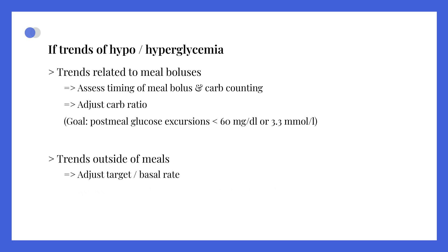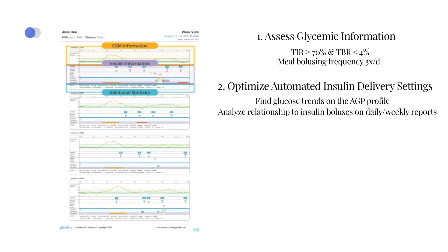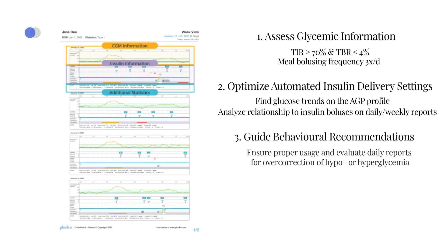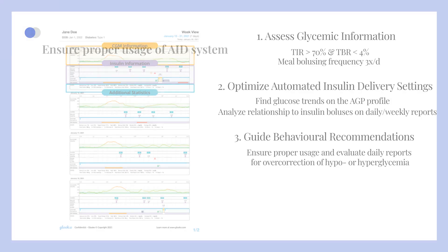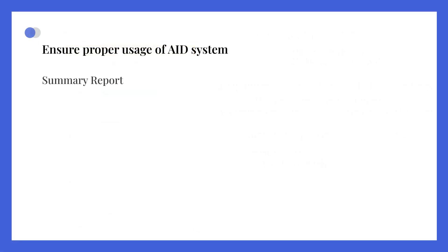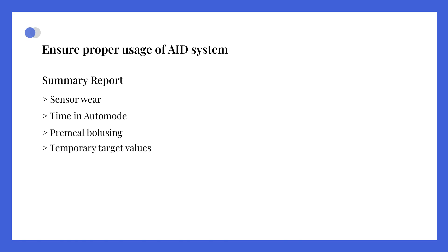Step 3: The goal is to minimize post-meal glucose excursions to below 60 mg/dL or 3.3 mmol/L compared to pre-meal. Step 4: Additionally, explore possible correlations with missed boluses, exercise, alcohol, or hypoglycemia. Ensure proper usage of the automated insulin delivery system by checking sensor wear, activation of auto mode, adherence to pre-meal bolusing, correct use of temporary target values, and regular infusion set changes.